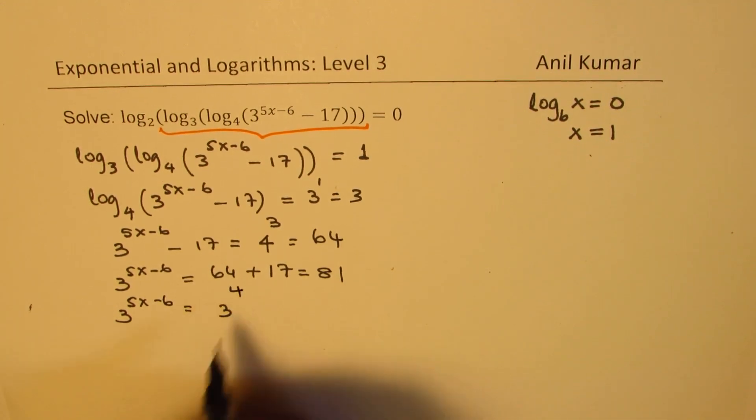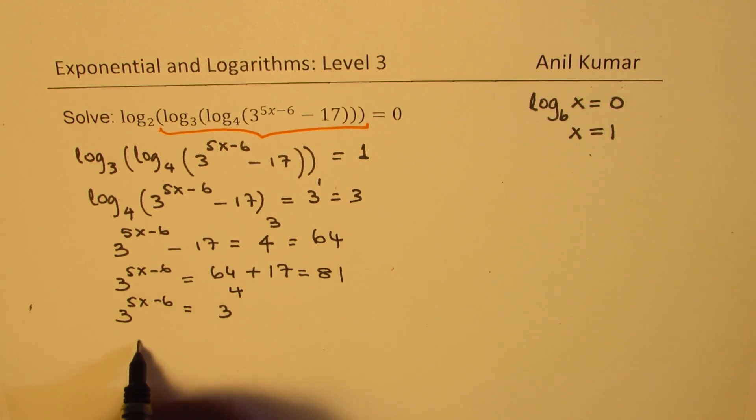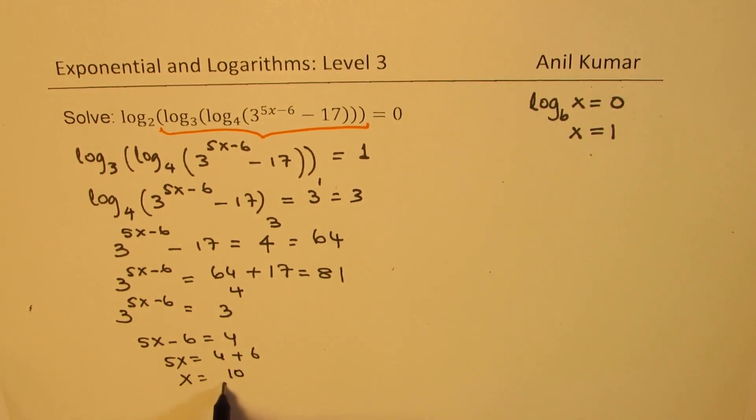81 is 3 to the power of 4. With the same base, we can equate the exponents, so we get 5x minus 6 equals 4. Therefore, 5x equals 10, and x equals 10 over 5, which is equal to 2.